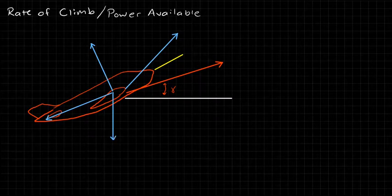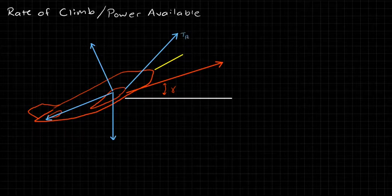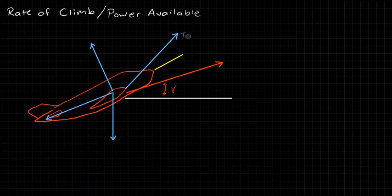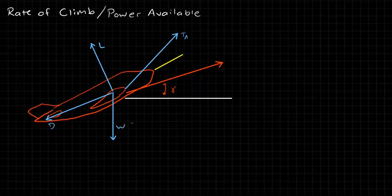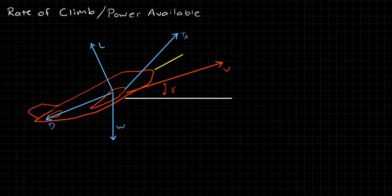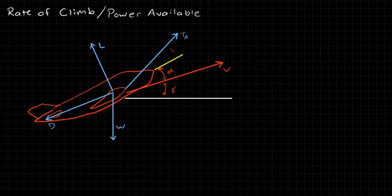We're a little bit more complicated here, so let me label everything for clarity. Here we have the thrust available — that is, the actual thrust that the aircraft is flying with. Here we have the lift, here we have the drag, here we have the weight, and this is our velocity. Just a couple more angles: this angle here is the angle of attack, and this angle here is the thrust angle, alpha sub t.